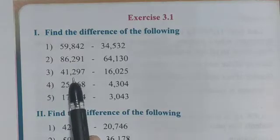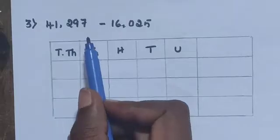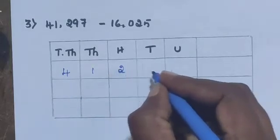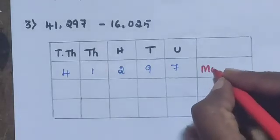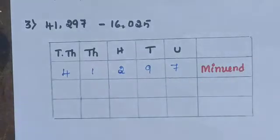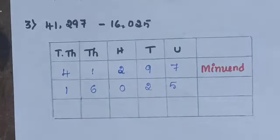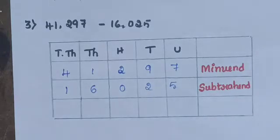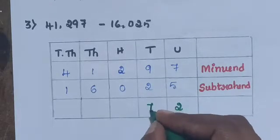Next, question number 3: 41,297 minus 16,025. 41,297 is the larger number — the minuend — and 16,025 is the subtrahend. Find the difference: 7 minus 5 is 2. 9 minus 2 is 7. Then 1 minus 6 — here we need to borrow.